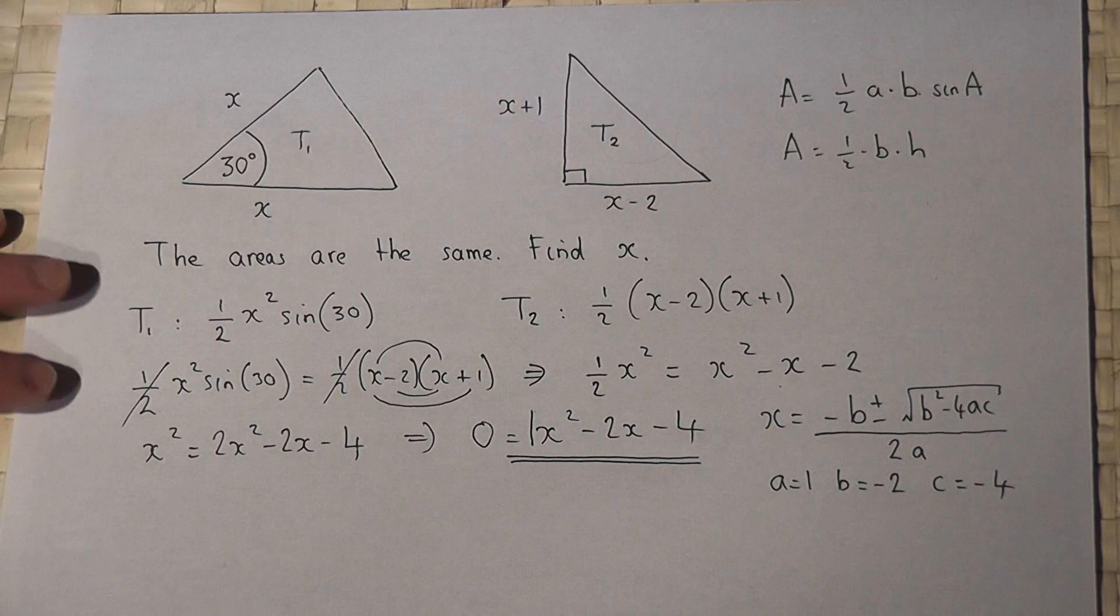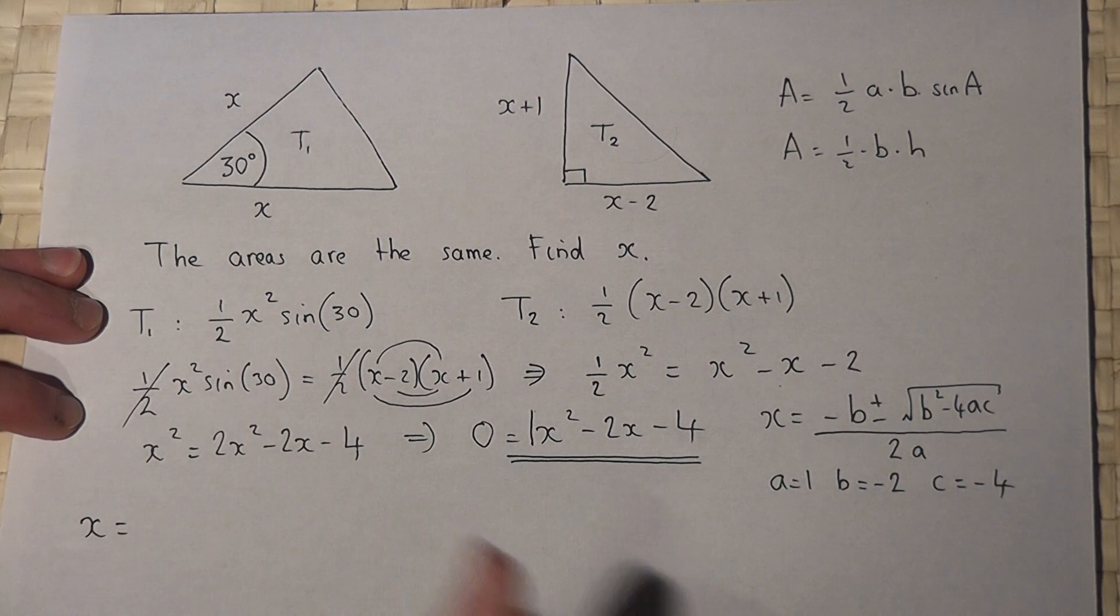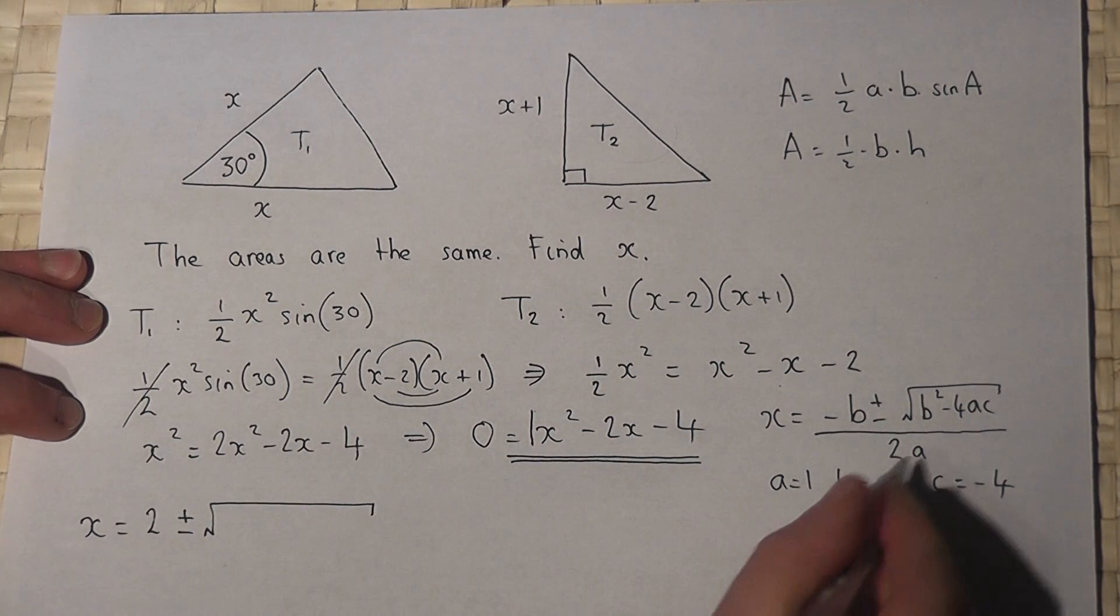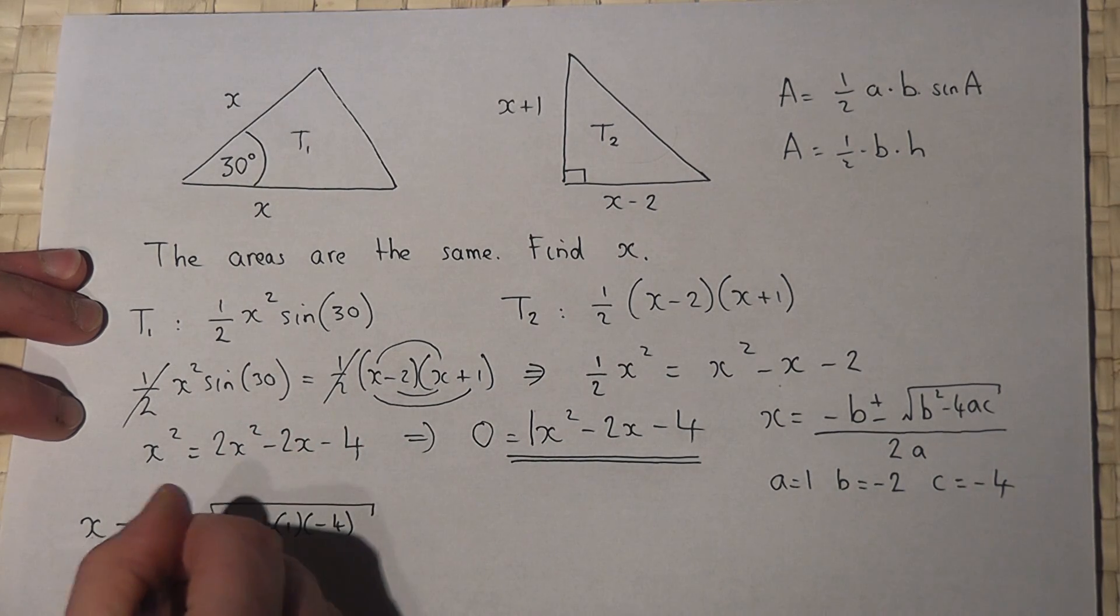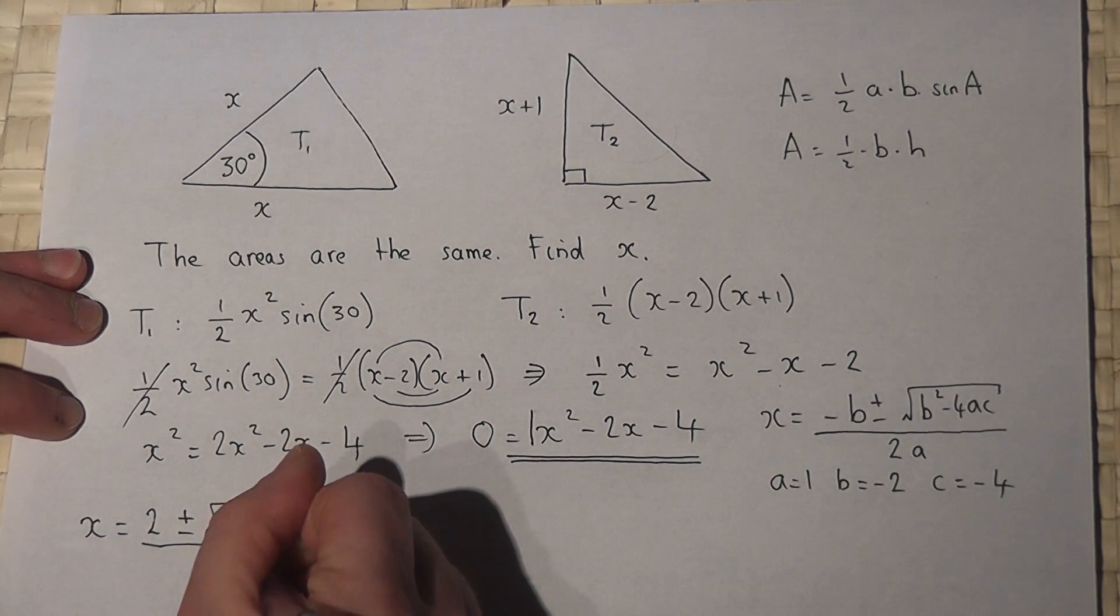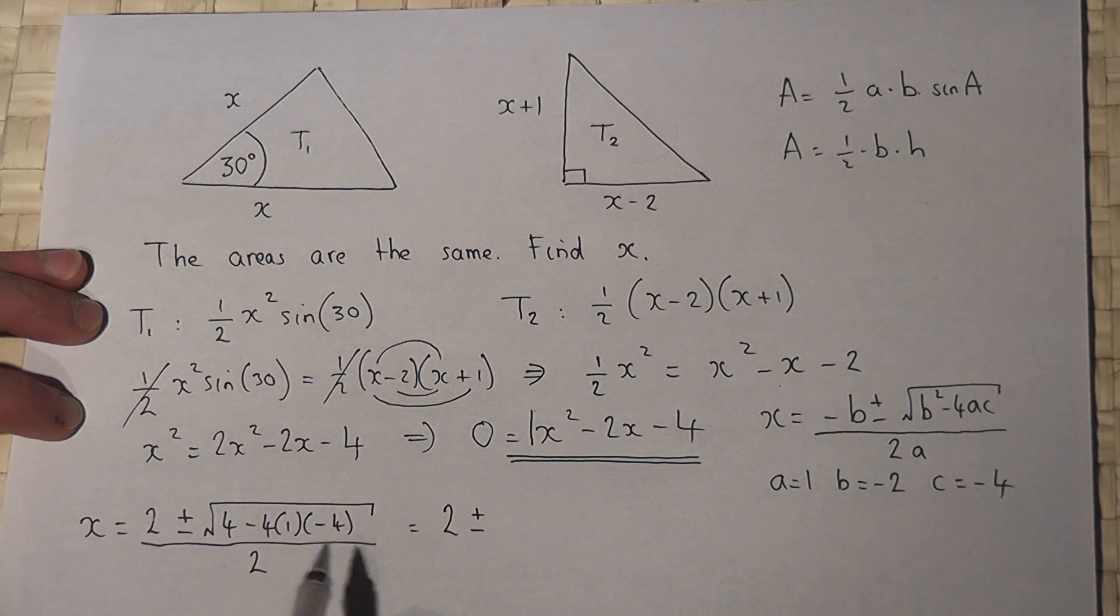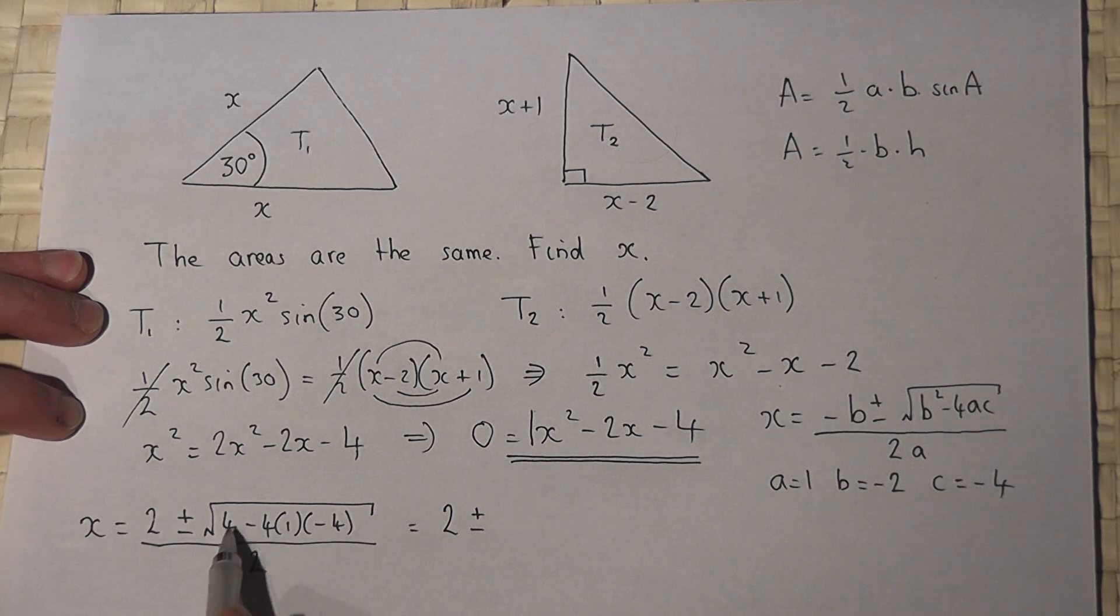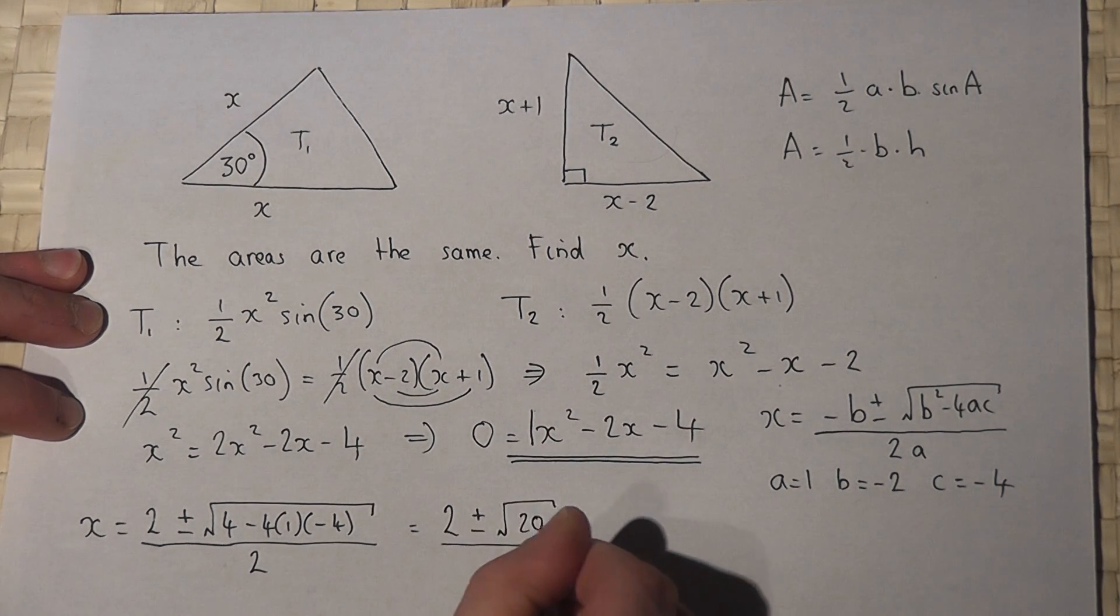So let's now solve the equation and we'll leave our answer in terms of a surd. So x equals minus b, which becomes plus 2, plus or minus the square root of b squared, minus 2 squared is 4, minus 4 times a times c, all over 2 times a, all over 2. So that becomes 2 plus or minus the square root of, now be careful here, minus 4 times minus 4 becomes plus 16, so 4 plus 16 is 20, so root 20 all over 2.